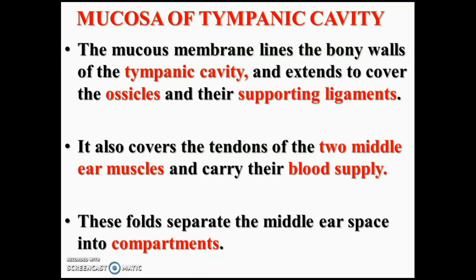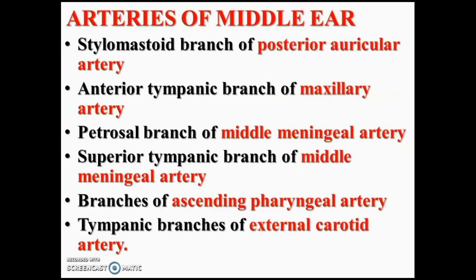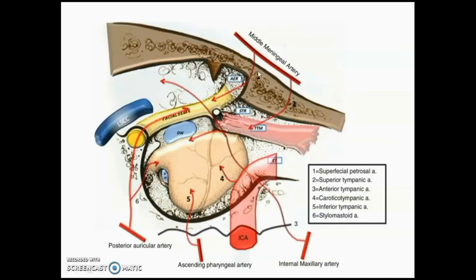The mucous membrane not only lines the tympanic cavity walls, it also covers the ossicles, ligaments, and muscles, carrying their blood supply. These mucous folds separate the middle ear into a number of compartments. Coming to the arteries of the middle ear: the stylomastoid artery from the posterior auricular artery, the anterior tympanic branch of the first part of the maxillary artery, the petrosal branch of the middle meningeal artery, and the superior tympanic branch coming from the internal carotid and ascending pharyngeal. There are six arteries in total: superior petrosal, superior tympanic, anterior tympanic, inferior tympanic, Jacobson's tympanic, and stylomastoid arteries. They enter the tympanic cavity and supply the mucosa and contents.